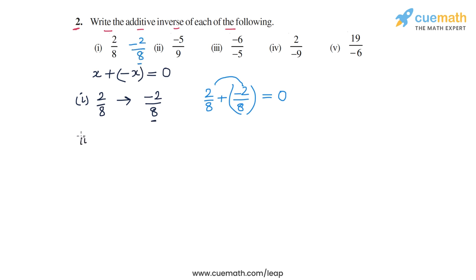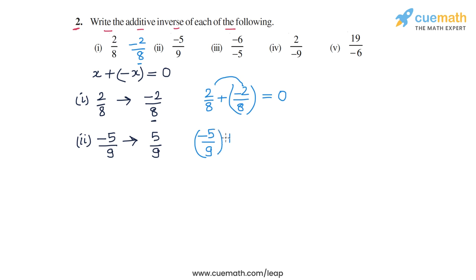In the second part, the rational number is -5/9. So we take the negative of this, which means we invert the sign of the numerator, giving us 5/9. So 5/9 is the additive inverse of -5/9. We can check: if we take -5/9 and add 5/9 to it, the numerators -5 and 5 will add to zero, and we will get zero.